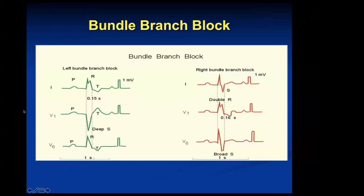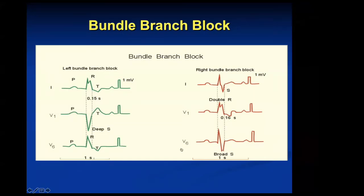In LBBB, the R wave is deeply inverted in V1, and then V6 has a morphology that mirrors lead 1. If you contrast that to a right bundle branch block, you can see that it's going up in V1. You have this thin, deep S wave rather than the T wave that you see in LBBB. By knowing what things look like in lead 1, V1, and V6, you'll have a good sense whether you're dealing with LBBB or RBBB. You need a QRS length of 120ms or greater to qualify for either.